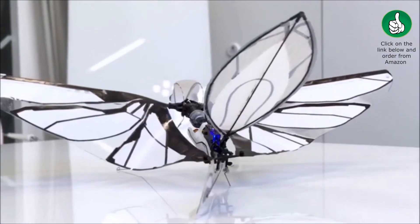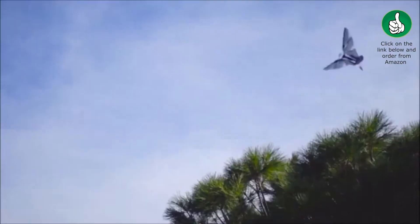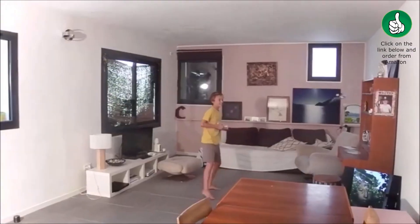Outdoors, MetaFly can enjoy its full speed. By changing the direction of its tail, MetaFly can fly faster when its tail is down, or more controllable when it's up.